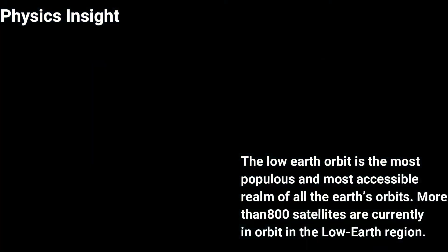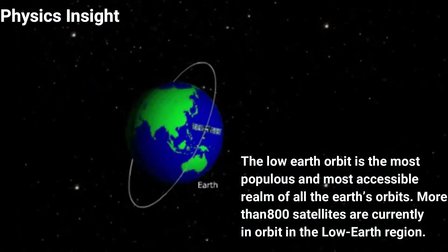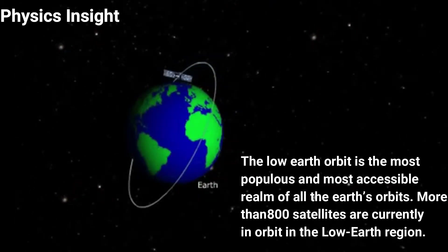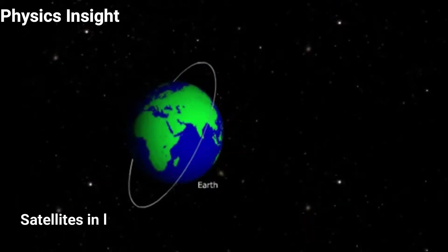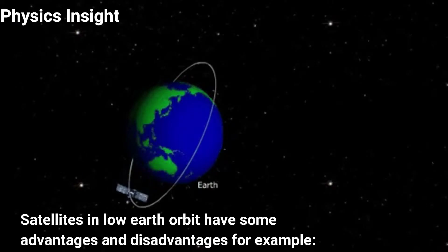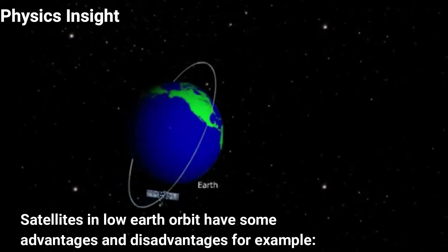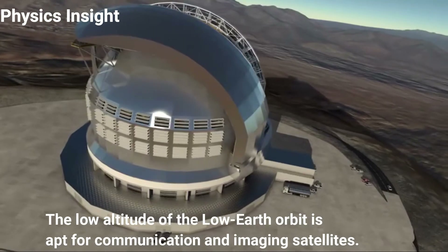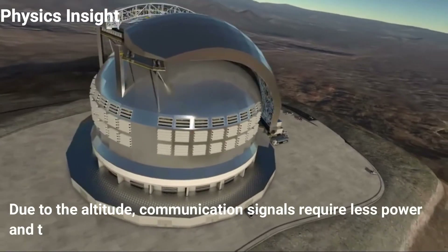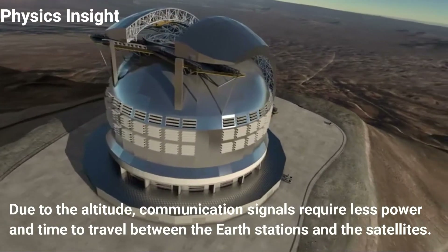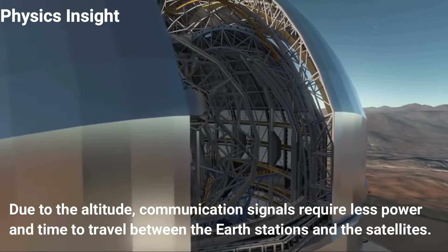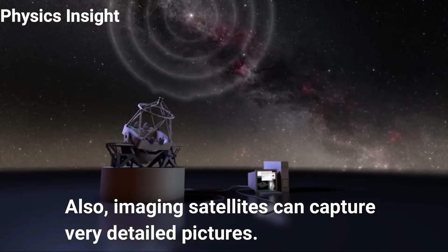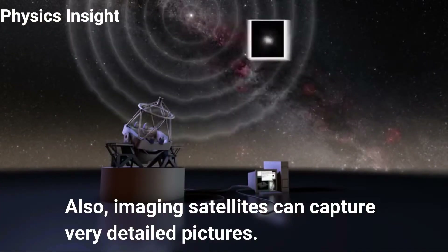The low Earth orbit is the most populous and most accessible of all Earth's orbits — more than 800 satellites are currently in low Earth orbit. The low altitude is ideal for communication and imaging satellites, since communication signals require less power and time to travel between Earth stations and satellites. Additionally, imaging satellites can capture very detailed pictures.